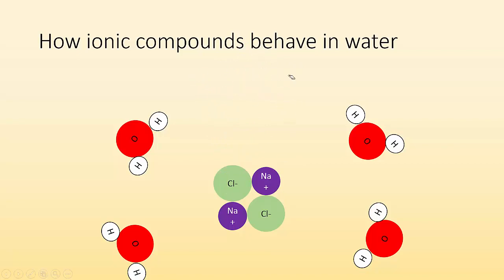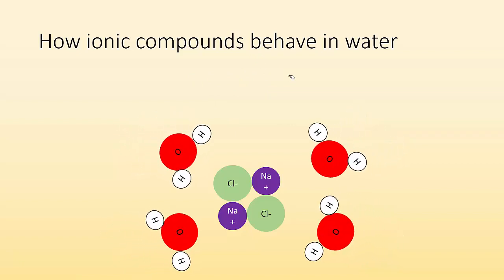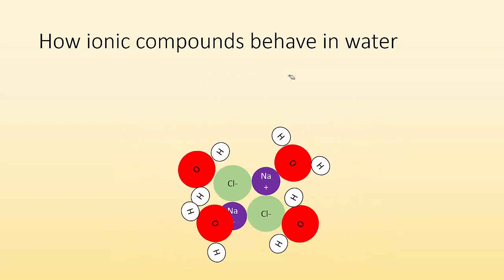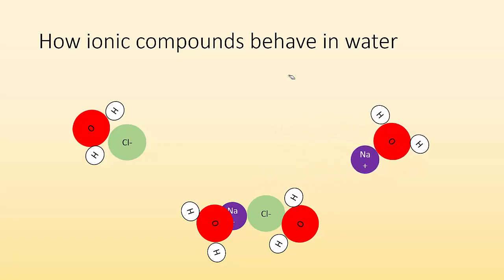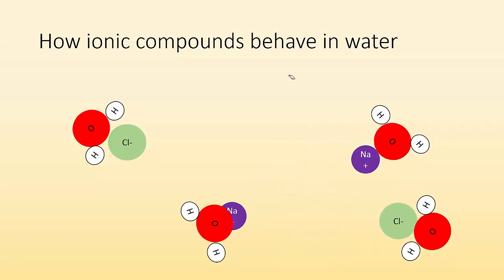So if I put some sodium chloride, some salt in water, what happens is the water molecules will be attracted to the ions. And then those water molecules are going to separate those ions from each other. And that's what's happening when things are dissolving. Where did it go? Well, the water molecules pulled it apart from it being in a solid and now they're dissolved.